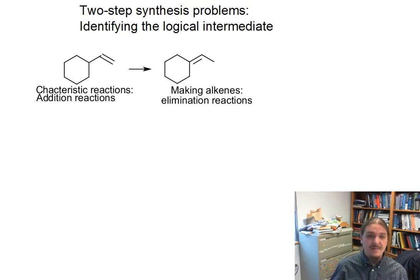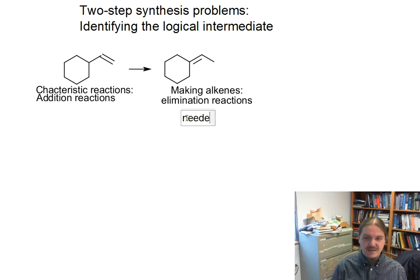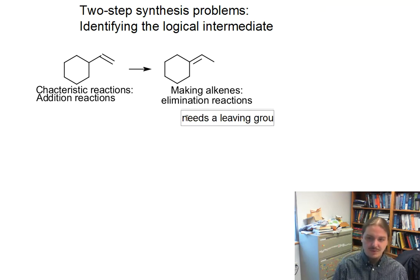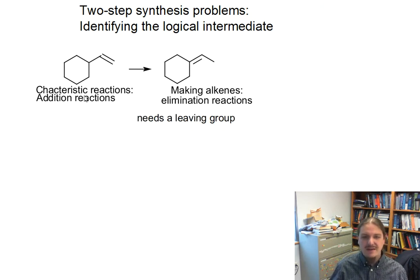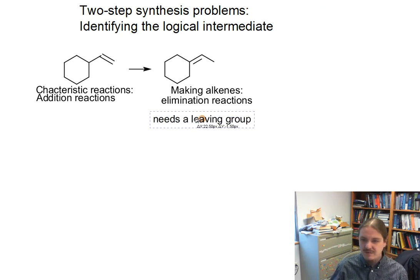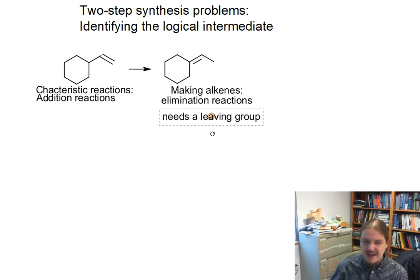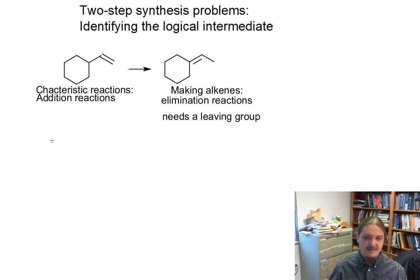I also asked in that video for you to think about the characteristic ways that you can make a particular functional group. How do we make alkenes? We make alkenes mostly by elimination reactions. And what does an elimination reaction need? An elimination reaction needs a leaving group.